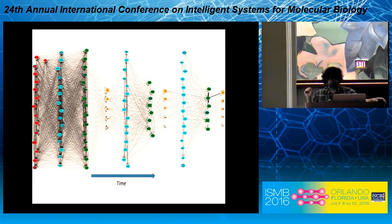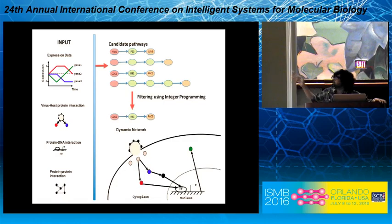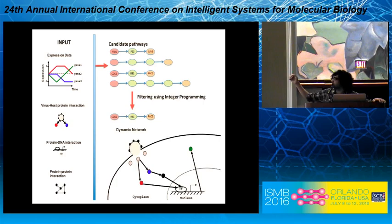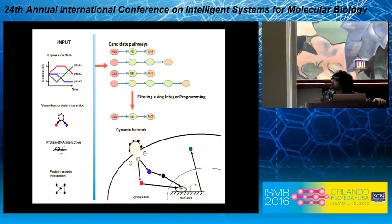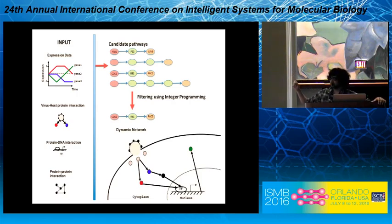This is an overview of our method. The input we have is the time series gene expression data, the virus-host protein interaction data — which virus proteins are interacting with which host cell proteins — the protein-DNA interaction data, and the protein-protein interaction data. In our HIV application, the only condition-specific data we use is the first two: the gene expression data and the virus-host protein interaction data. The other two are non-condition specific.